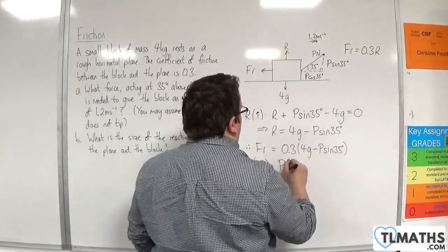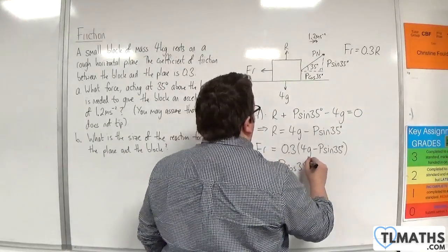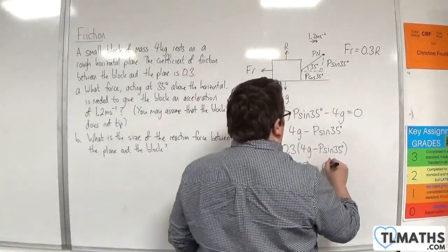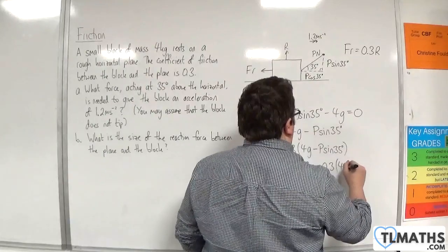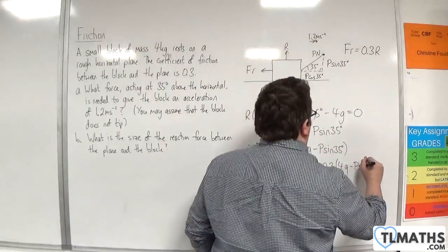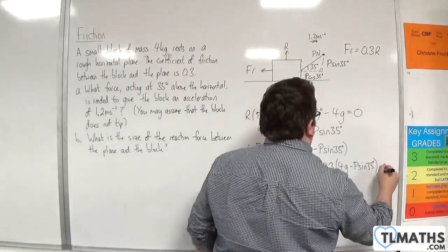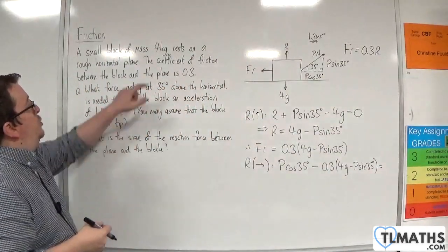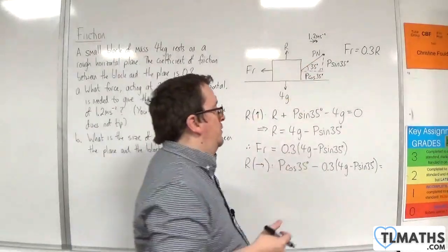And then we need to take away the friction, so 0.3 times 4G take away P sin 35. This is equal to the mass times by the acceleration, so 4 times by 1.2.